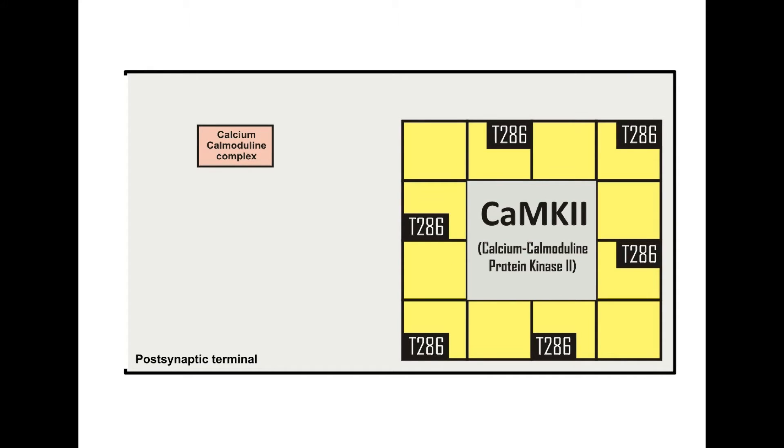This calcium-calmodulin complex binds with calcium-calmodulin protein kinase 2. The calcium-calmodulin protein kinase 2 has 12 subunits. Binding of calcium-calmodulin to a particular subunit transiently activates that subunit.